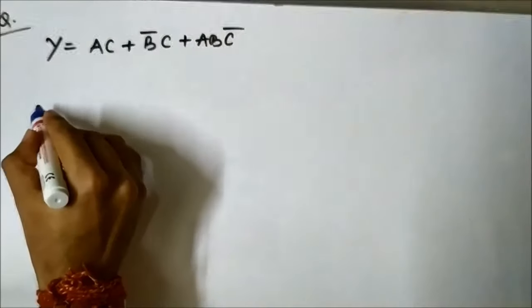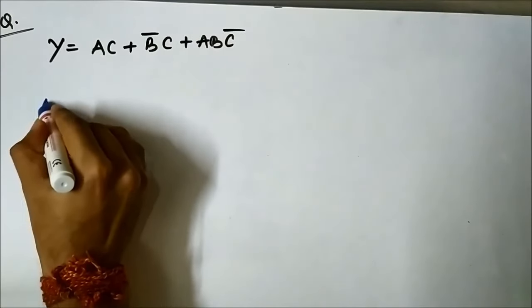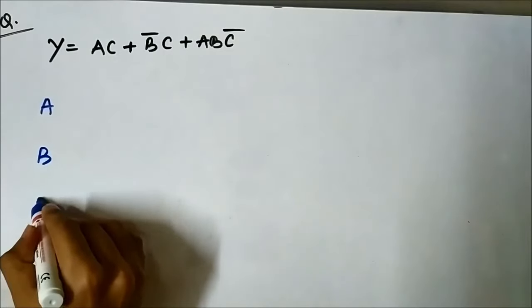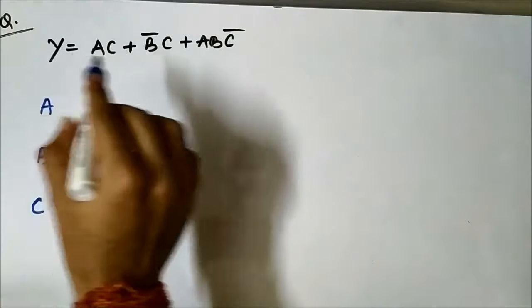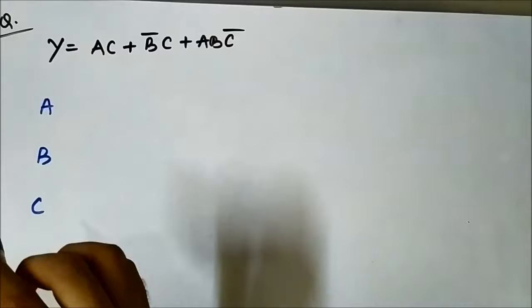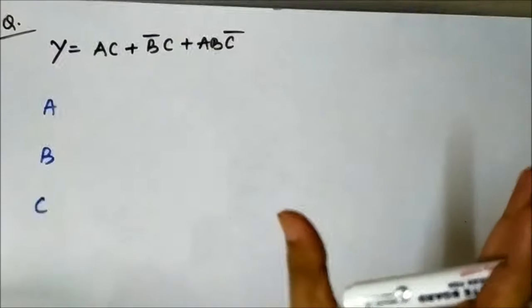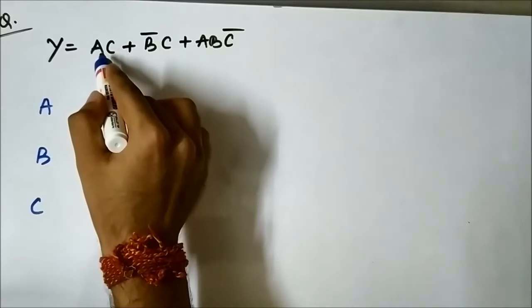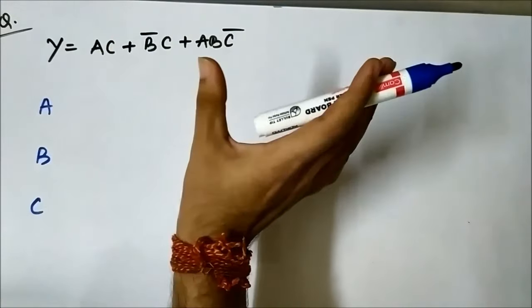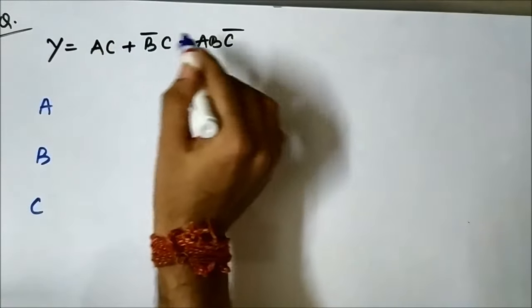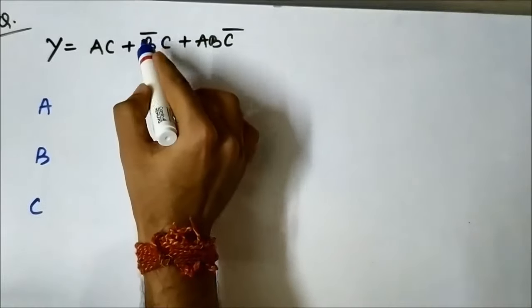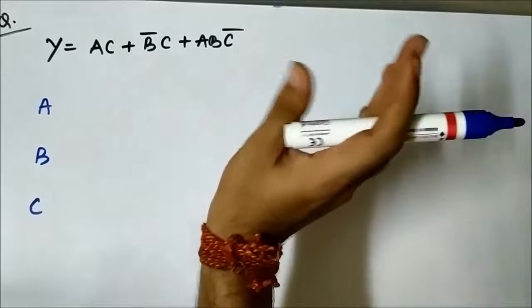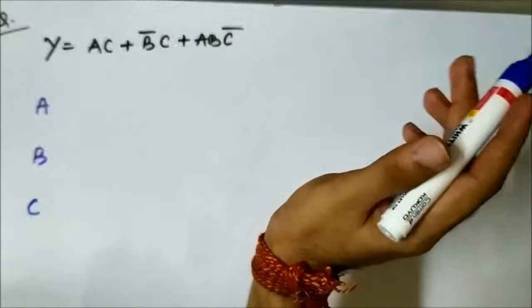First we will assign the different signal values A, B, C. Then by looking at the expression we will try to figure out which logic gates will be required. There is an AND operation between A and C, so AND gates will be required. The plus sign indicates OR gates will be required. The inversion on B and C — B̄ and C̄ — means a NOT gate or inverter will be required.